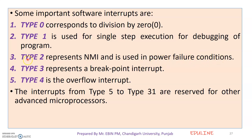Type 5 and certain other types are reserved. They are reserved for advanced microprocessors. Type range 0 through 23 covers these reserved entries.